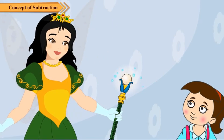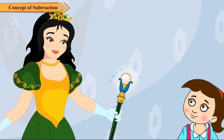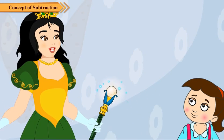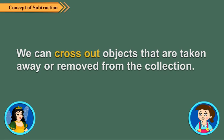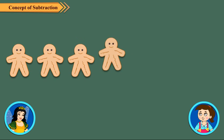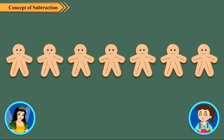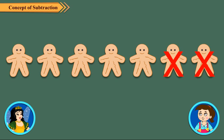How can we subtract two numbers? You know that we remove objects from the collection when we subtract. So we can cross out objects that are taken away or removed from the collection. Let us take the example of the cookies. There were seven cookies. Two cookies were removed from the collection, so we cross out two cookies. Now count how many are left — five.